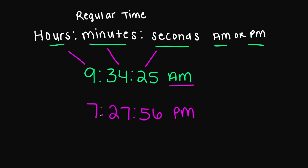All right, what about this regular time? 7 is my hours, 27 is the minutes, 56 is going to be the seconds, and this is p.m.